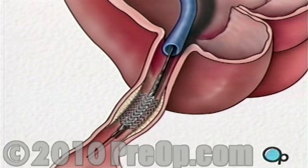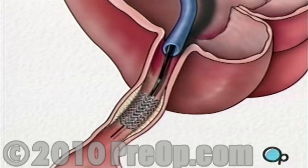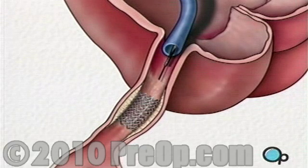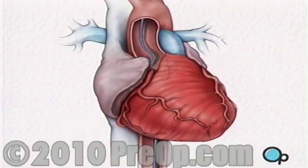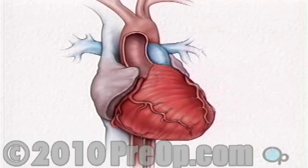Finally, after a thorough investigation of the region, the catheter and guide wire are withdrawn. The stent remains permanently to provide support to the artery and to resist the buildup of plaque. The dye that had been injected will break up and leave your body as waste. Slight pressure is applied to the incision in your leg in order to prevent bleeding.